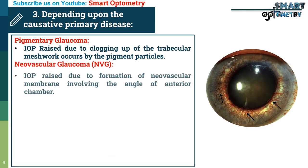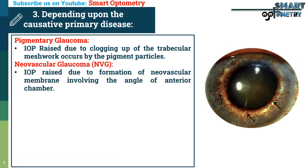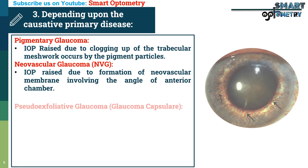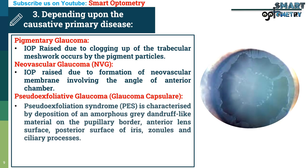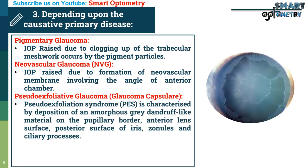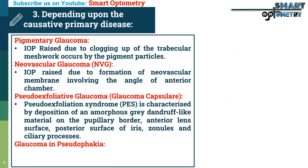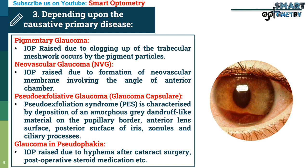Neovascular glaucoma — IOP raised due to formation of a neovascular membrane involving the angle of the anterior chamber. Pseudo-exfoliative glaucoma — pseudo-exfoliative syndrome is characterized by deposition of an amorphous gray dandruff-like material on the pupillary border, anterior lens surface, posterior surface of iris, zonules, and ciliary processes. Glaucoma in pseudophakia — IOP raised due to hyphema after cataract surgery, post-operative steroid medication, etc.